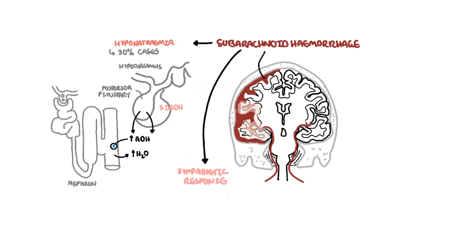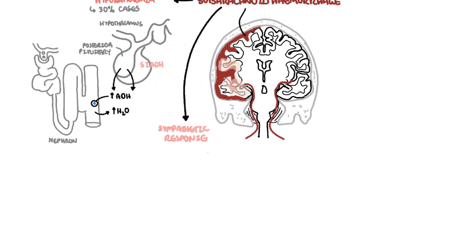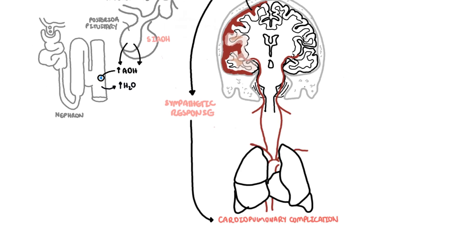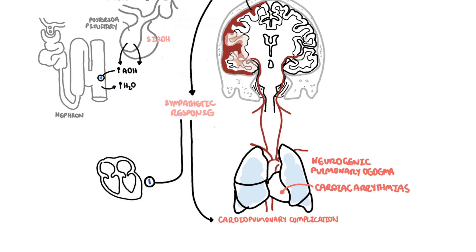During subarachnoid hemorrhage, there is an increased sympathetic response, which can lead to cardiopulmonary complications, including neurogenic pulmonary edema and cardiac arrhythmias. The body's response to the central sympathetic overdrive is to produce natriuretic peptides such as brain natriuretic peptide (BNP). BNP causes natriuresis — essentially excreting salt from the body — and this is one of the potential causes of hyponatremia, termed cerebral salt wasting.